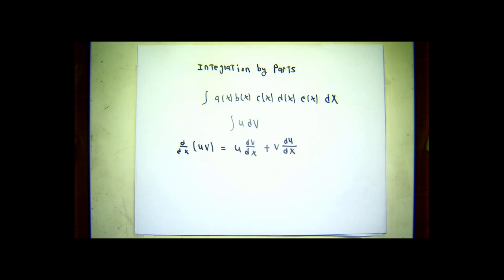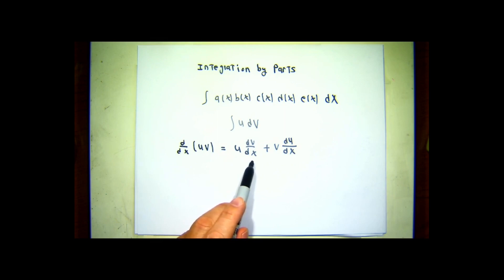We are going to manipulate this by using the product rule backwards. So imagine that u and v are functions of x, and I want to differentiate the product of them. Using the product rule, the derivative of u times v is u times the derivative of v plus v times the derivative of u. Then, in what seems like a pointless maneuver, we're going to integrate both sides of this.